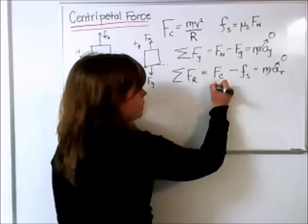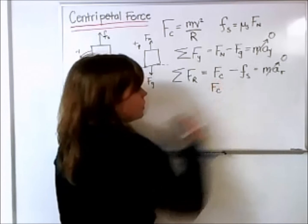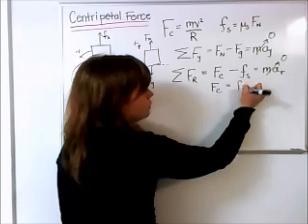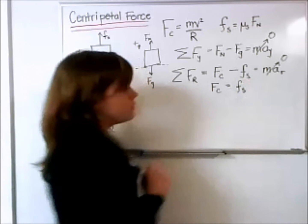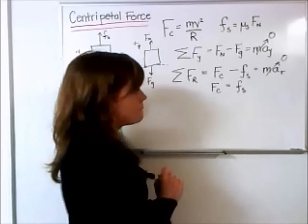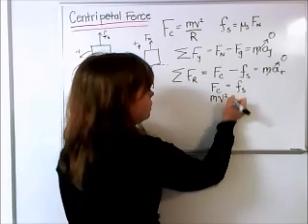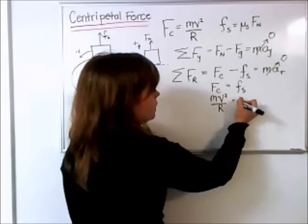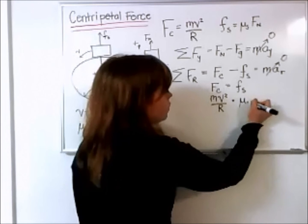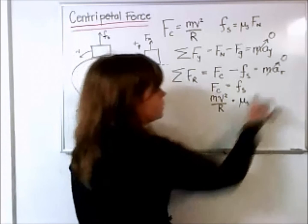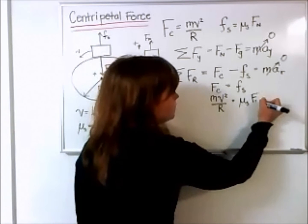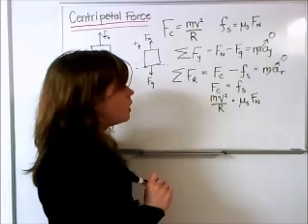So we get the centripetal force is equal to the static friction force. Rewriting a little more, we get mv squared over R is equal to the coefficient of static friction times the normal force.